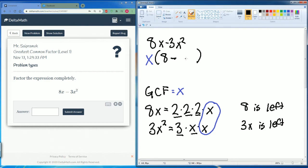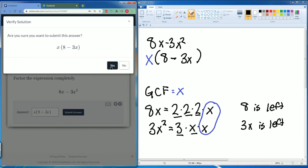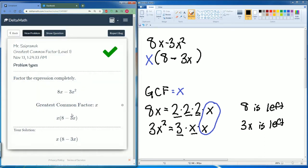Be careful, this is a minus, so you minus 3x. So that is what we're going to put as our answer: x(8 - 3x). We close the parentheses, then we submit our answer. Good! Our greatest common factor was x, that is correct.